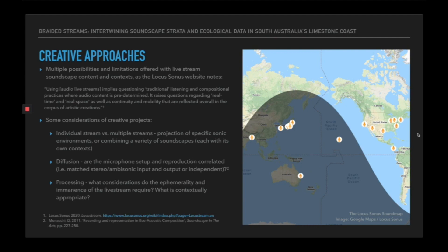It raises questions regarding real time and real space, as well as continuity and mobility that are reflected overall in the corpus of artistic creations. Some of the considerations of creative projects include whether to use an individual stream or perhaps multiple streams, with the projection of specific sonic environments versus the combination of a variety of soundscapes. There's also the question of diffusion—are the microphone setup and reproduction systems correlated, i.e., matched stereo or ambisonic inputs and outputs?